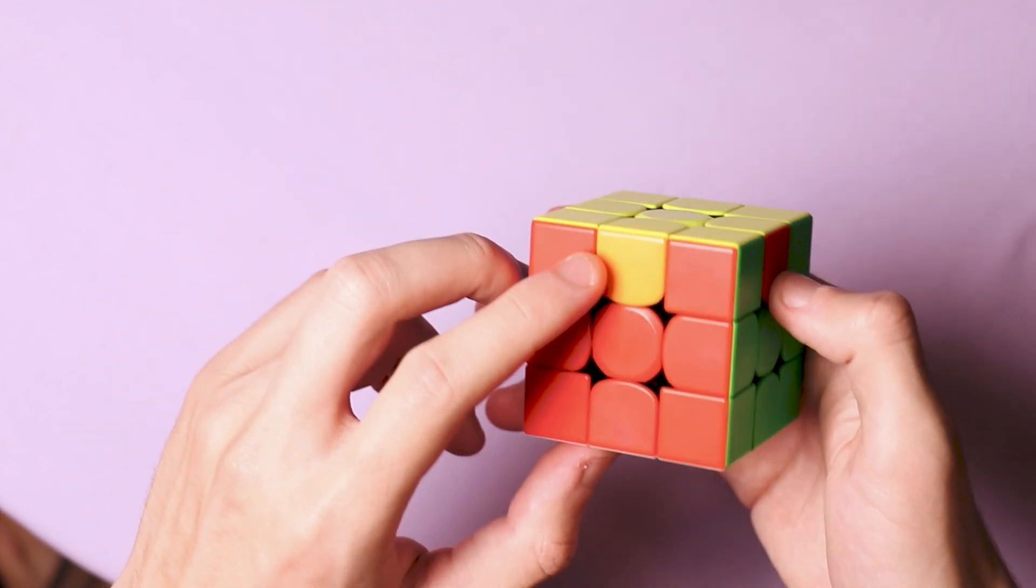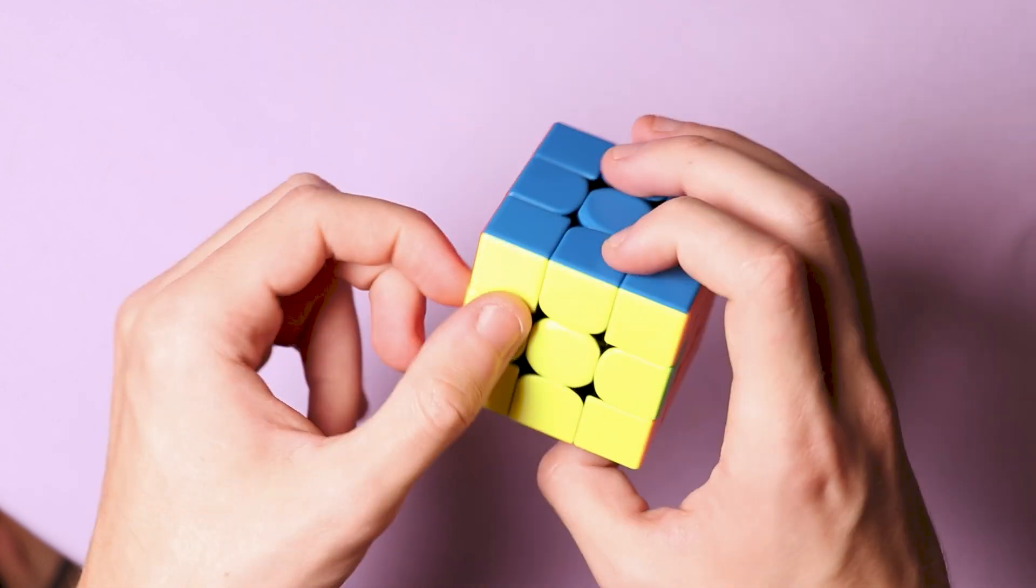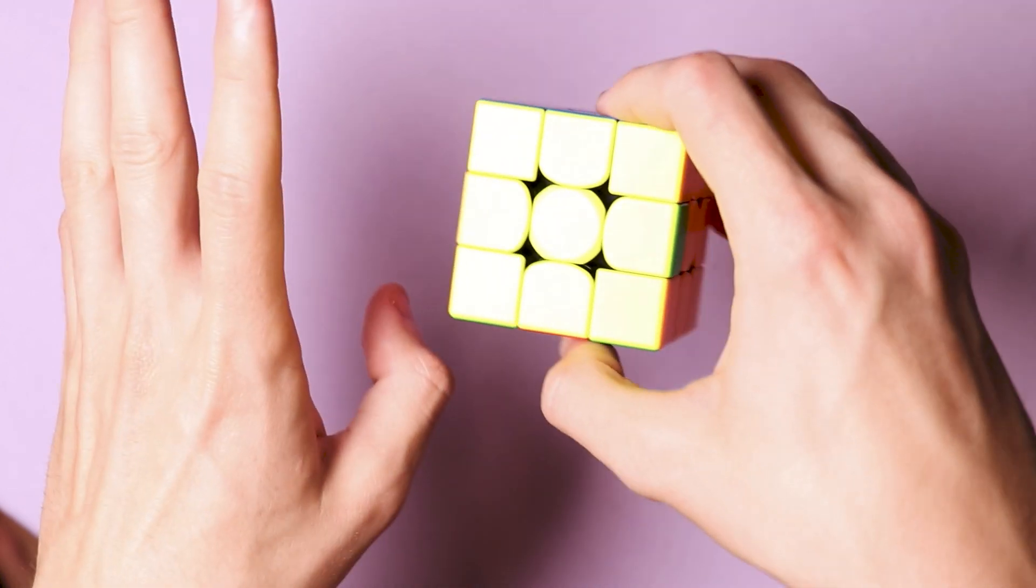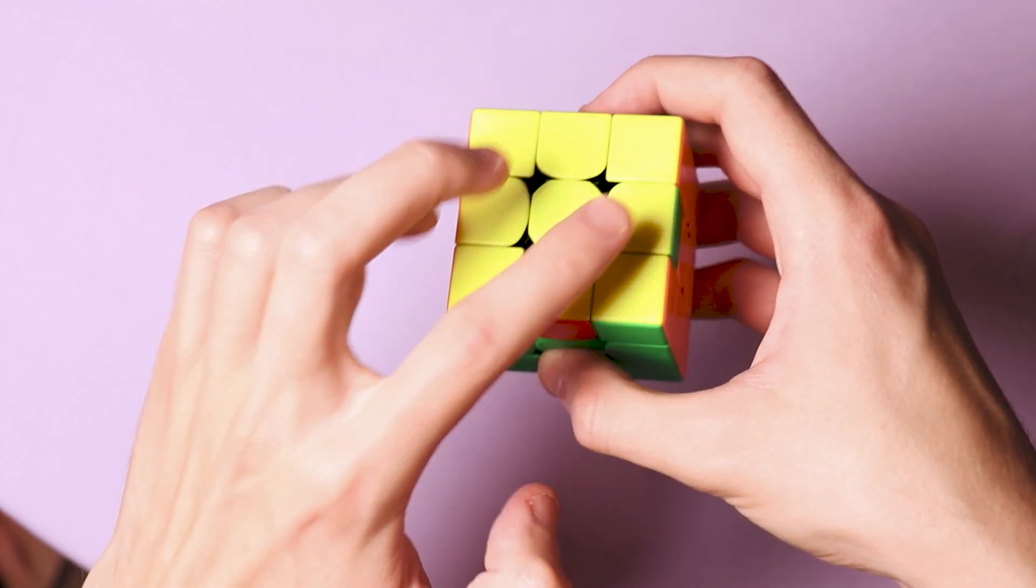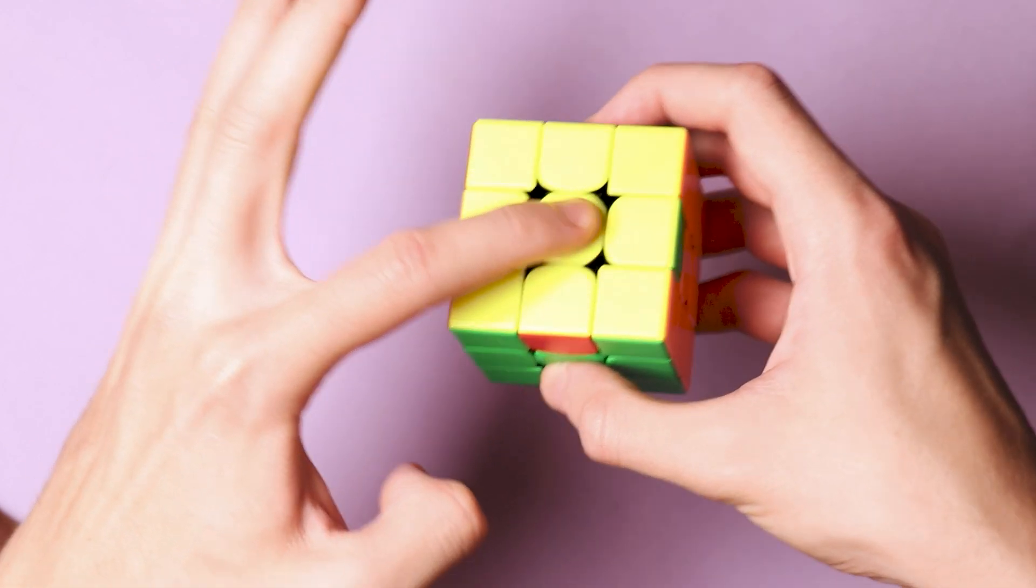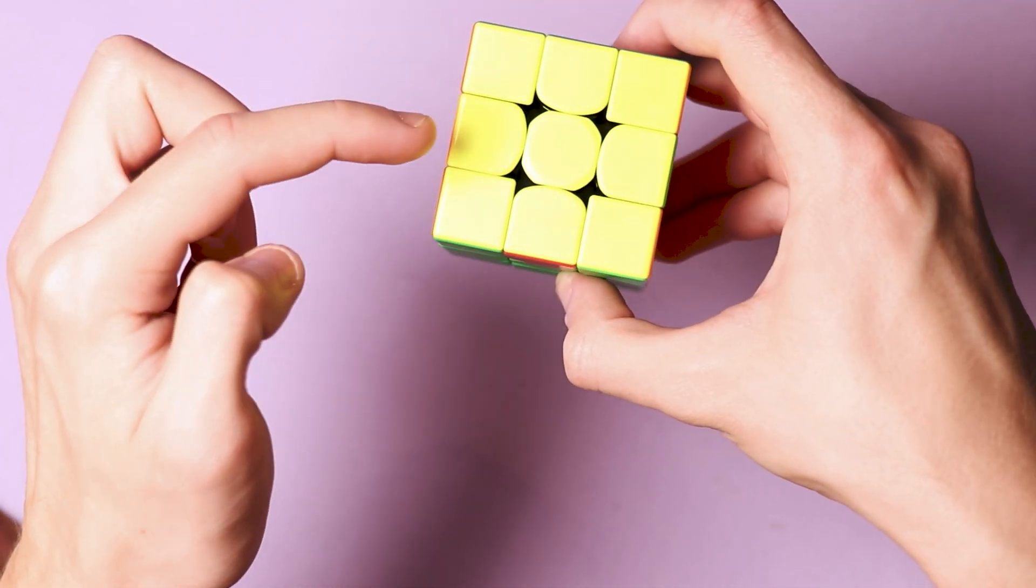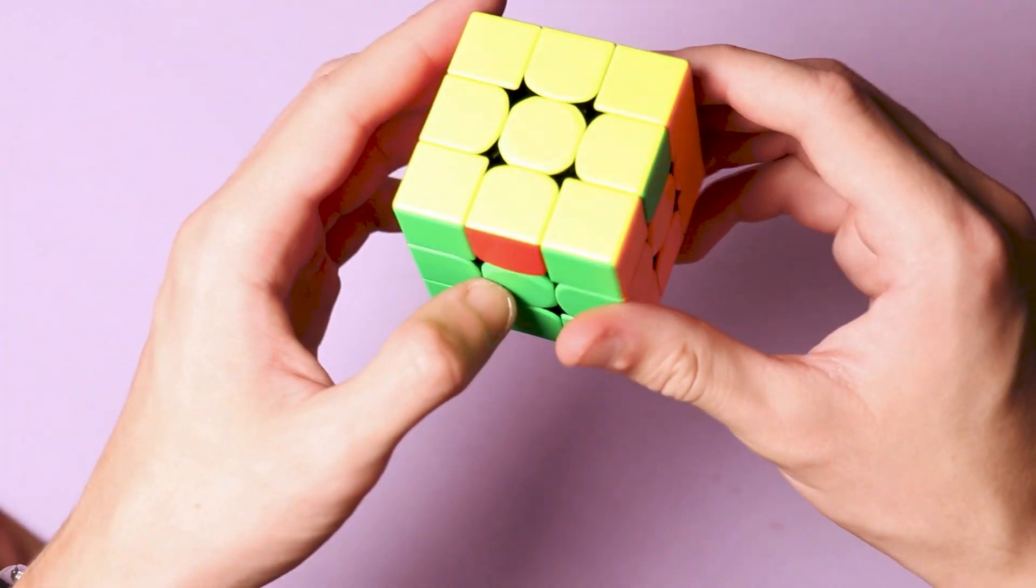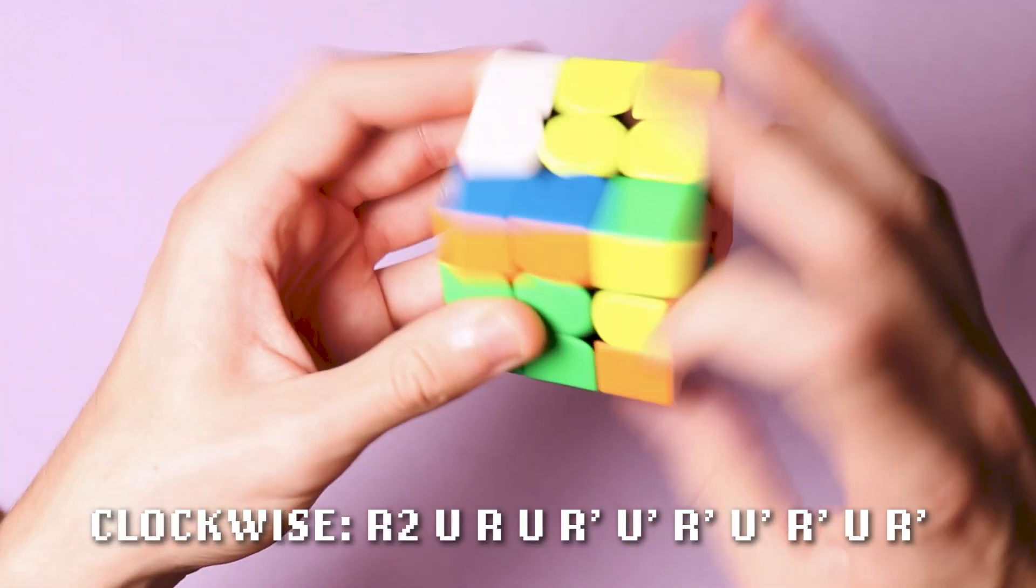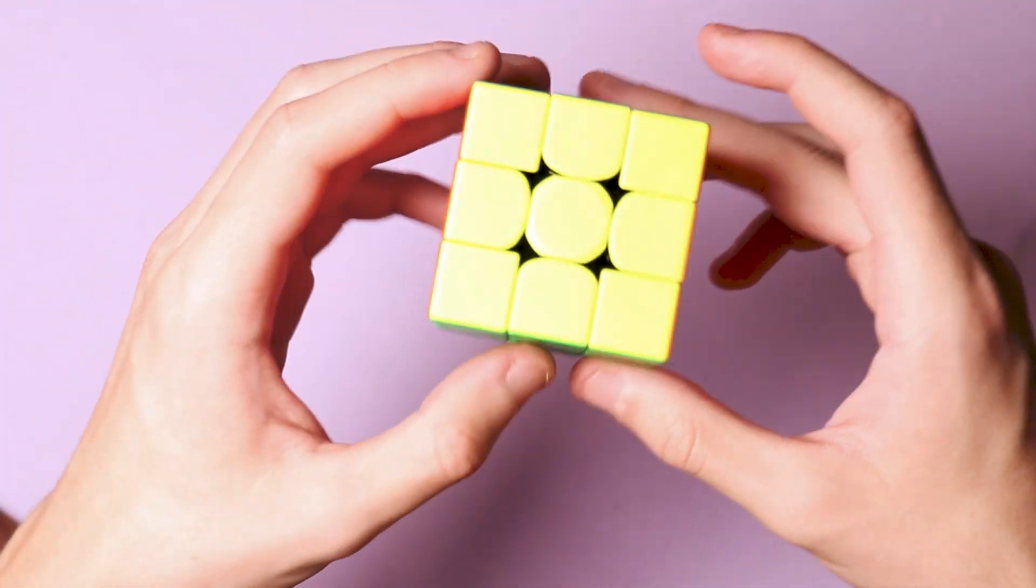From here there's one last thing you need to do, which is to change the positions of these edge pieces. There's two algorithms that can help you here. One will swap these three pieces in front of you clockwise, and the other one will swap it counterclockwise. This has to go here and this here and this here, which means the pieces have to move clockwise for me to solve the puzzle. So I'm gonna do an algorithm for a clockwise rotation and the puzzle is solved.